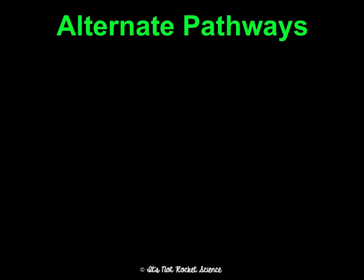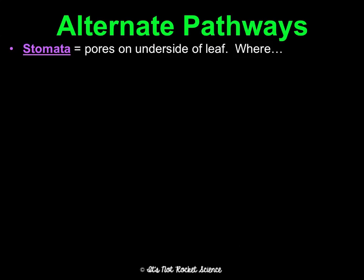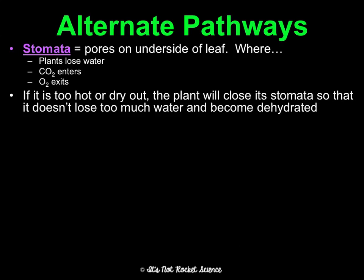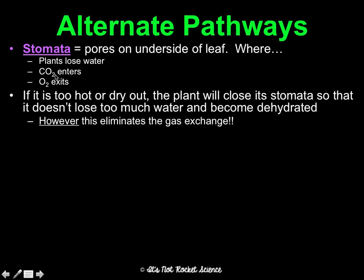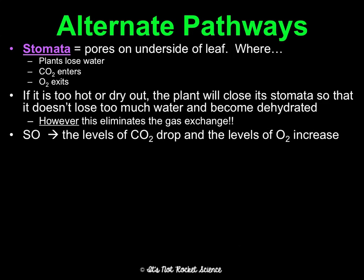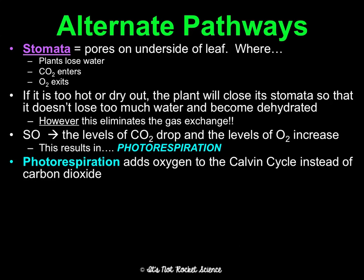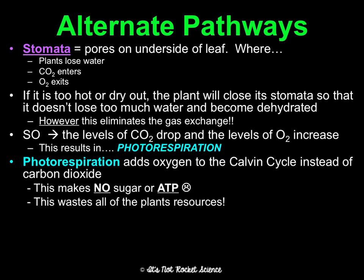Sometimes plants need an alternate option. Stomata are pores on leaves that allow gases in and out — this is where plants lose water, where CO2 enters, and where O2 exits. If it's too hot or dry, plants close their stomata so they don't get dehydrated. But when stomata are closed, CO2 can't come in and O2 can't exit, causing CO2 levels to drop and O2 levels to increase. This creates photorespiration, where oxygen gets added to the Calvin cycle instead of carbon dioxide — meaning no sugar is made and ATP production is wasted.